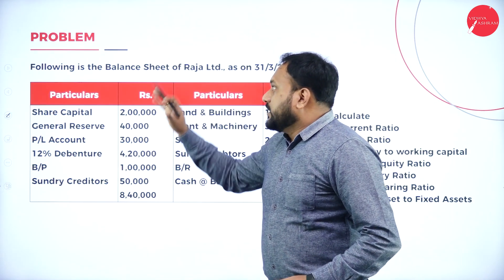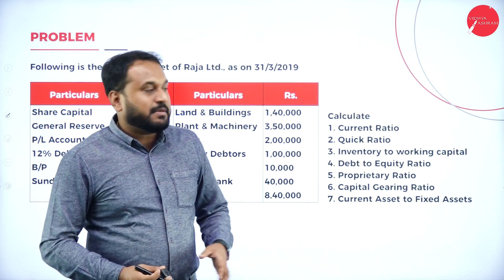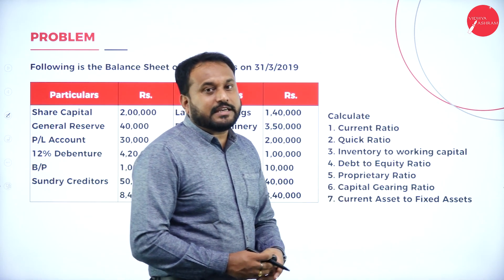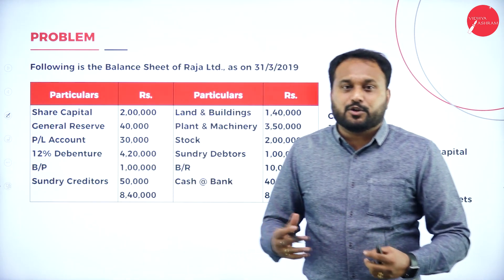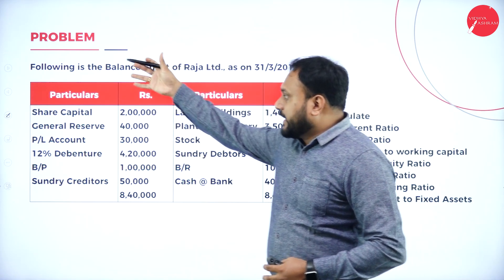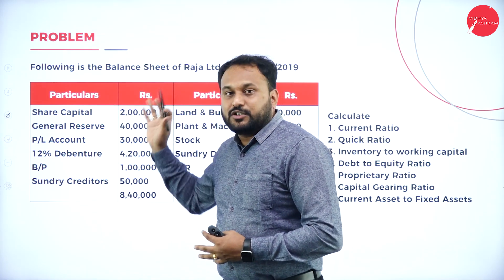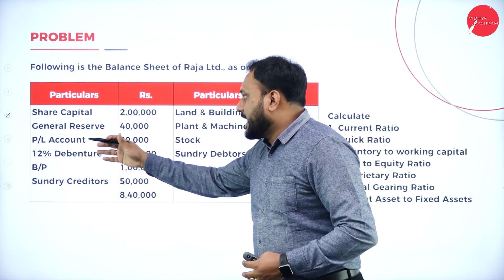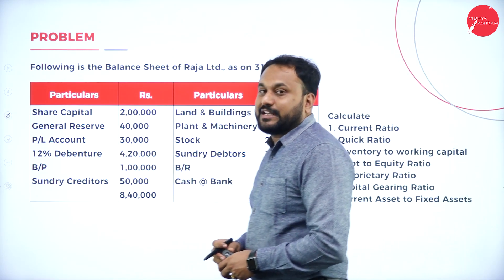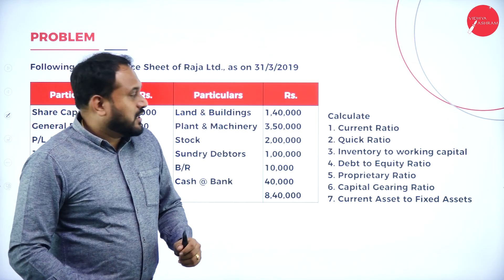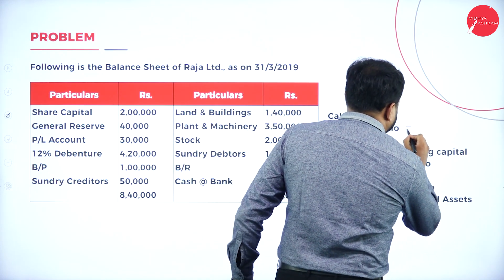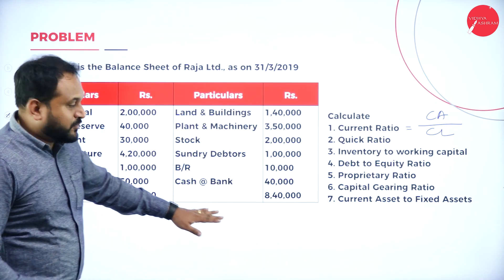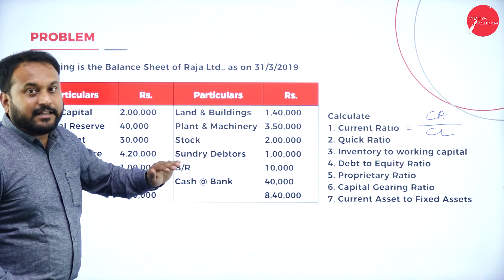Now the 15-mark question will look like this: you will get a balance sheet along with about 7 questions, each carrying 2 marks or 1 question of 3 marks. They will ask you to compute ratios. Liability is on the left — Share Capital, General Reserves, etc. — and Assets on the right. For Current ratio, the formula is Current Assets divided by Current Liabilities.